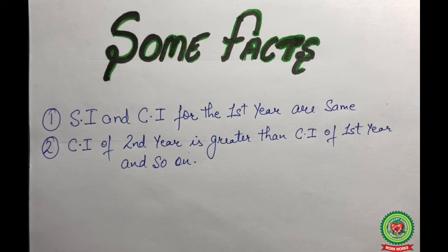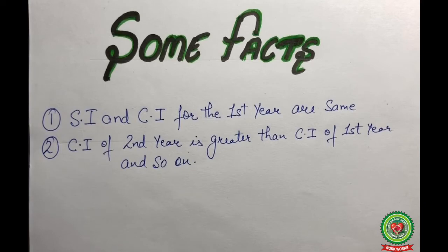As discussed earlier, simple interest for every year remains the same, but compound interest changes every year. So CI for the second year will be greater than CI of the first year, CI of the third year will be greater than CI of the second year, CI of the seventh year will be greater than CI of the sixth year, and so on. Now let us discuss the formulas to find amount and compound interest.